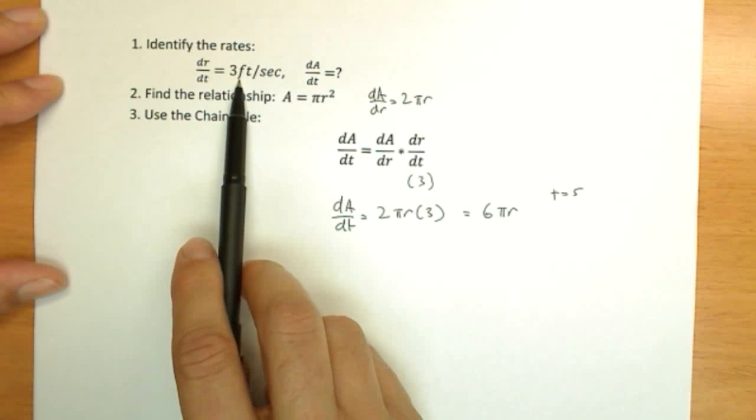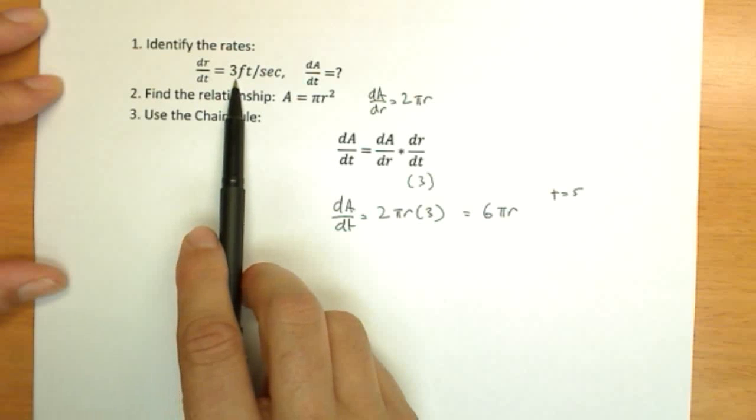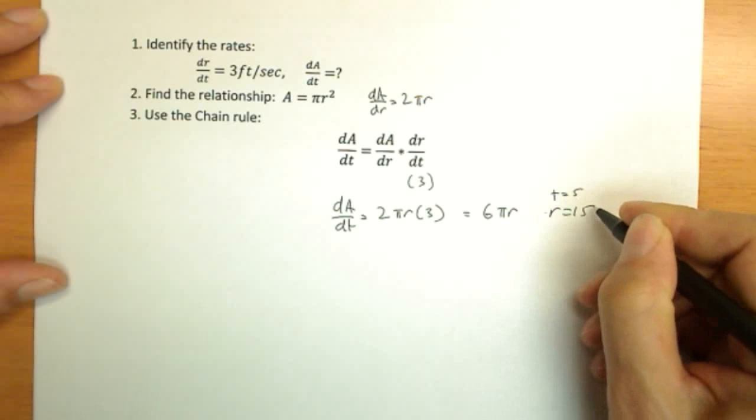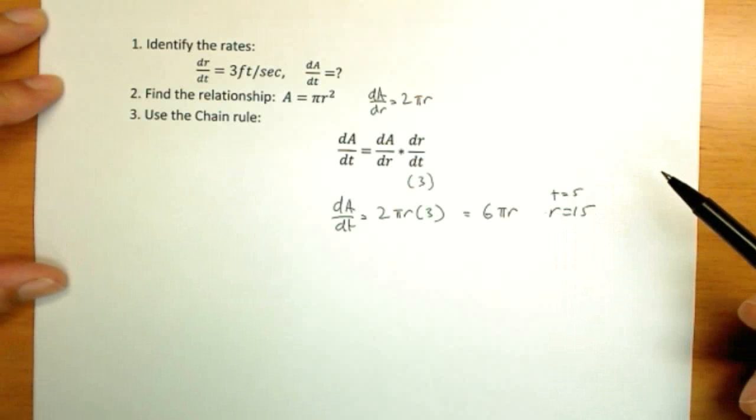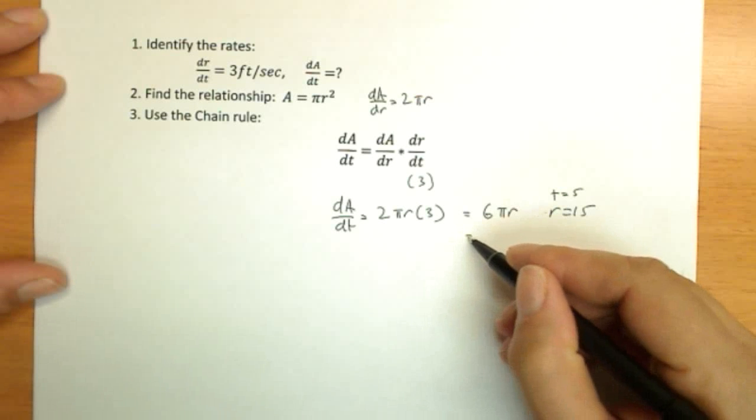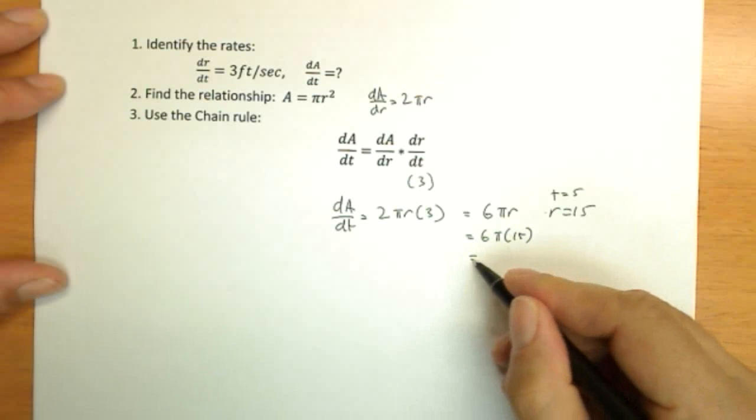dr/dt is increasing at 3 feet per second. And we threw the stone in and it started at 0. So 5 seconds, if it increased 3 feet per second all that time, r would be 15. 5 times 3, so it was 15 foot radius by then. So we would have 6 pi times 15, or 90 pi.